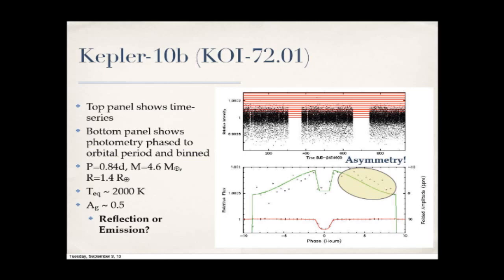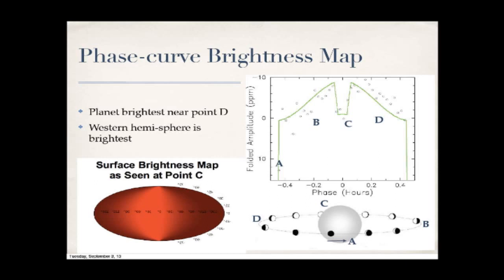I can turn this into a phase curve brightness map, assuming everything we see is due to reflectivity or emission from the surface. Starting at the transit point A, going through phase B, disappearing behind the star at C, then D and back to A — I map this from eastern to western hemisphere. The result is a simple map showing the western hemisphere is the brightest.